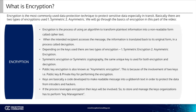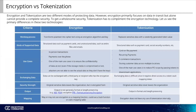If the process leverages encryption, then keys will be involved. So to store and manage the keys, an organization has to perform key management. So what are the major differences between encryption and tokenization? Encryption and tokenization are two different modes of protecting data. However, encryption primarily focuses on data in transit, but alone cannot provide complete security. To get much more wholesome security, tokenization has to complement the encryption technology.